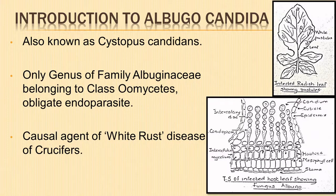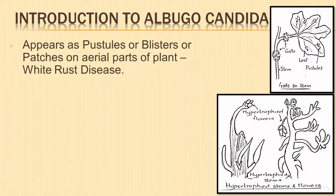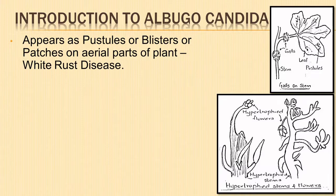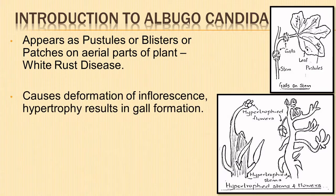It attacks several annual crucifers such as Brassica campestris, Raphanus sativus, etc. It invades all the parts of the plant which are above the ground; roots are not infected. The disease appears in the form of shiny white, irregular raised patches or pustules or blisters on the aerial parts of the plant. White rust disease is otherwise known as blister rust disease.